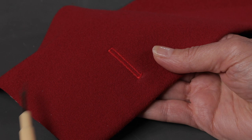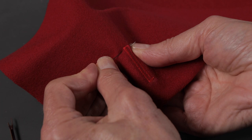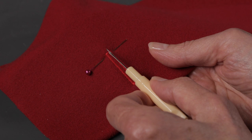You can use your seam ripper from your accessories to cut the buttonhole open but before you do it's a good idea to place a pin at one end so that as you cut the buttonhole open you don't accidentally cut too far and cut through that end of the buttonhole.